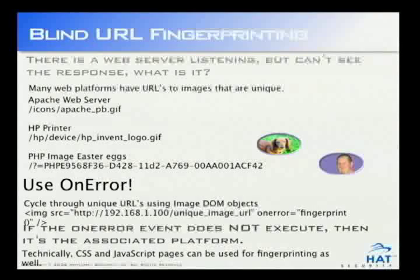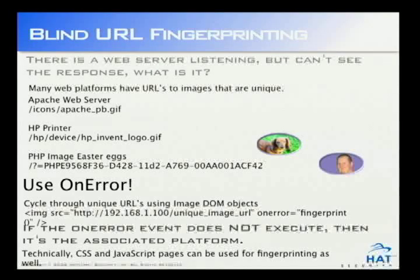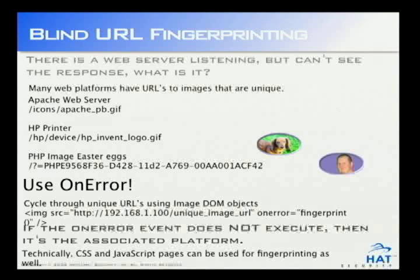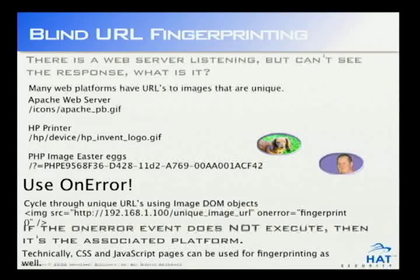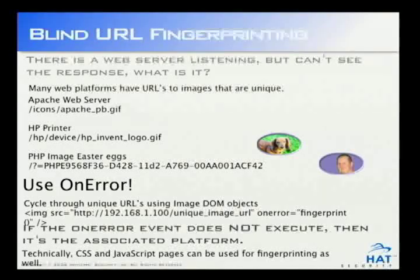There are all sorts of ways to fingerprint internal devices using the browser while blind. One method: use image source pointing to a unique URL on the device — whether it's a printer, router, firewall, Apache, or IIS web server. You attach an on-error event handler; if it doesn't fire, meaning the image was found, you know what the web server is. Another method uses unique JavaScript or CSS objects. One way we found: use the PHP Easter egg to determine what version of PHP a system is running.